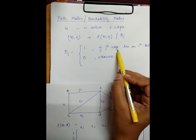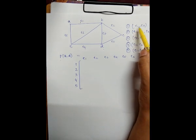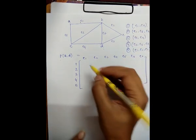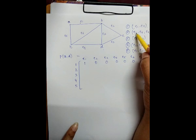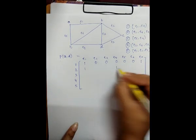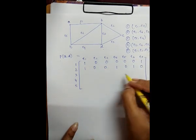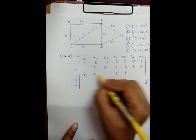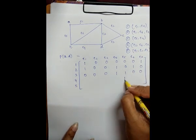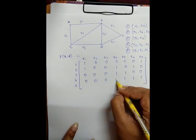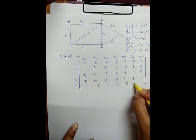Now, if the jth edge lies on the ith path, the value is 1 and the remaining values are 0. For the first path, we consider only E1 and E7, so E1 and E7 are 1 and the rest are 0. For the second path, E1, E4, and E6 are 1 and the rest are 0. For the third path, E5 and E4 are 1 and the rest are 0. For the fourth path, E5, E6, and E7 are 1 and the rest are 0. For the fifth path, E1, E2, and E3 are 1 and the rest are 0.